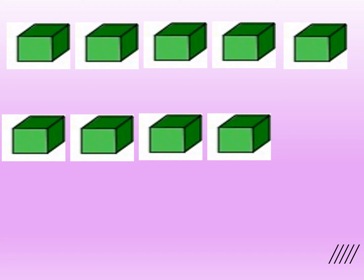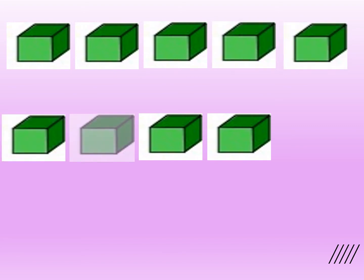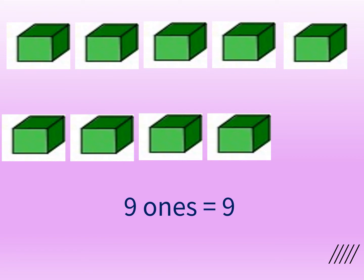Now let's count the number of 1s on the screen: 1 one, 2 ones, 3 ones, 4 ones, 5 ones, 6 ones, 7 ones, 8 ones and 9 ones. So there are 9 ones. 9 ones make the number 9.